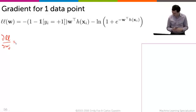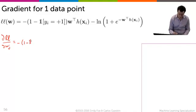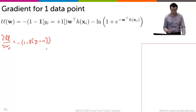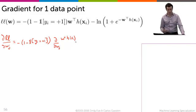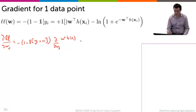This is the sum of two terms, so it just becomes the derivative of the sum. Let's look at the first term. So minus one minus the indicator function - that doesn't depend on w_j, so that can be pulled out. And so we just get minus one minus the indicator of y_i equals plus one, and whatever the partial derivative is with respect to w_j of w transpose h of x_i.